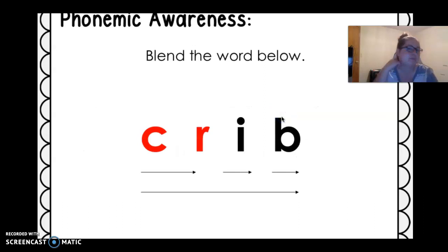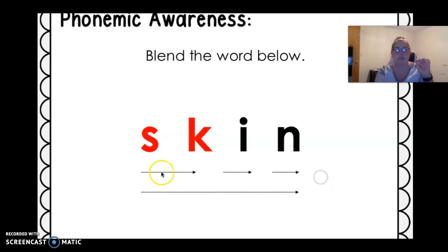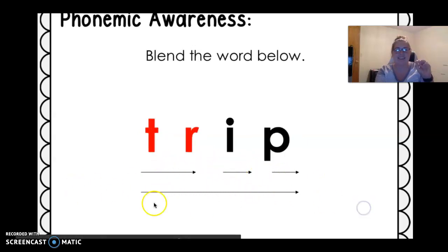Alright. Now you're going to see letters and you're going to tap them with me. Ready? Here we go. C. I. B. Crib. S. C. N. Skin. Tr. T. I. Trip. T. I. Trim. All right.